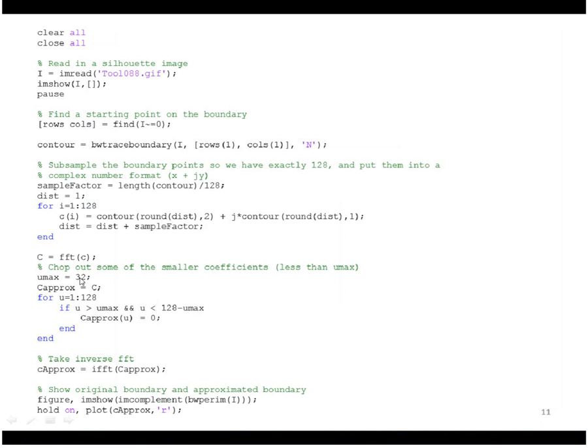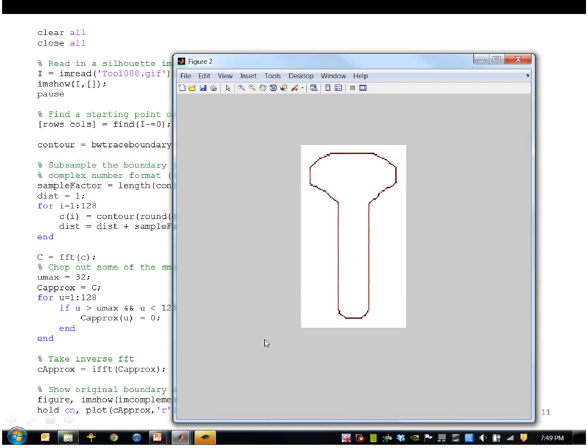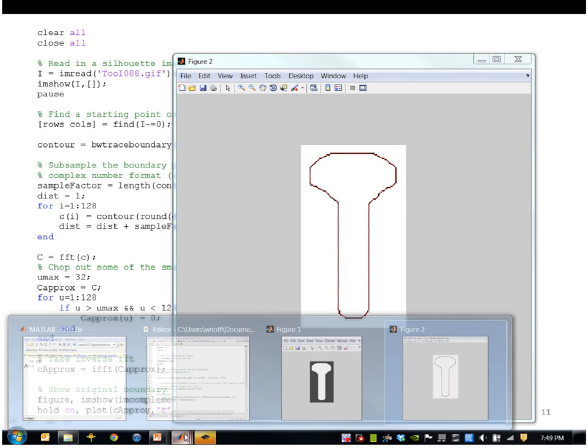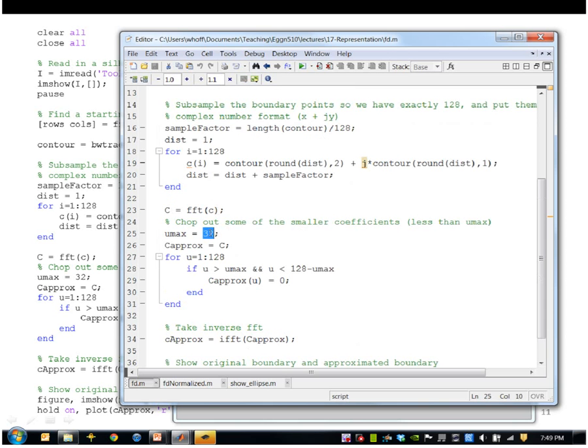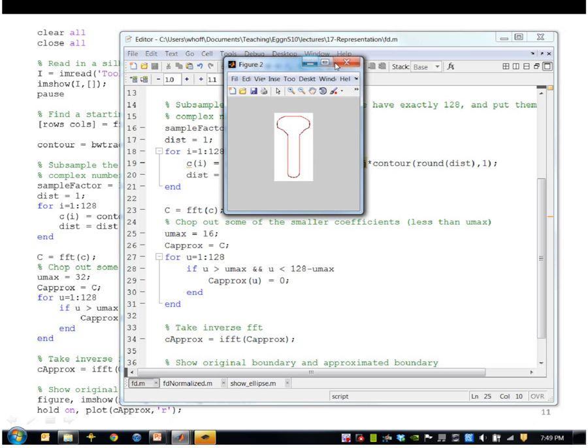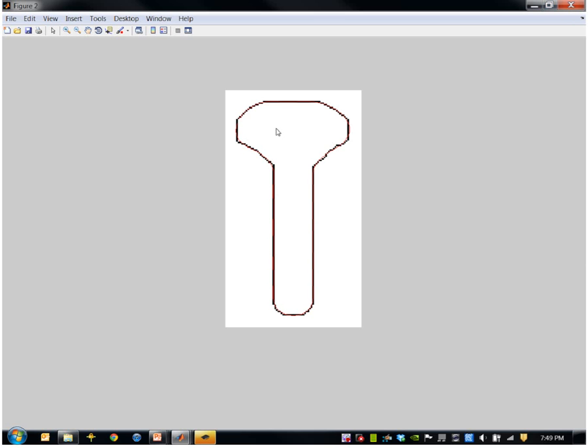That's with using essentially plus or minus 32 around the boundary, so 64 coefficients. If I change that—let's say 16—and now you see some rounding off of the sharp edges. So with only 32 coefficients, we have a more approximate version of the boundary.